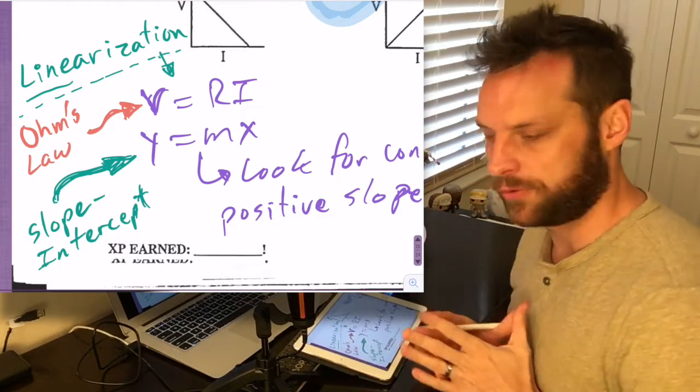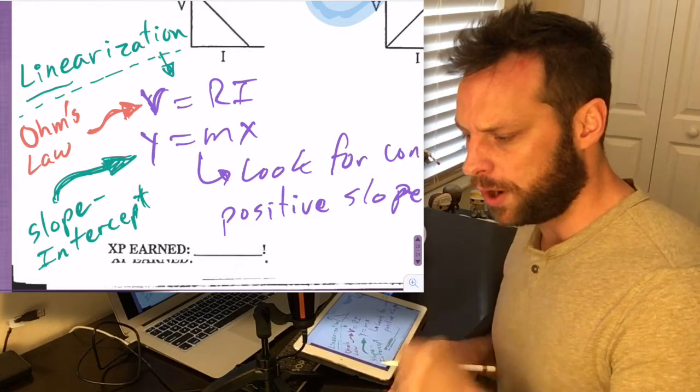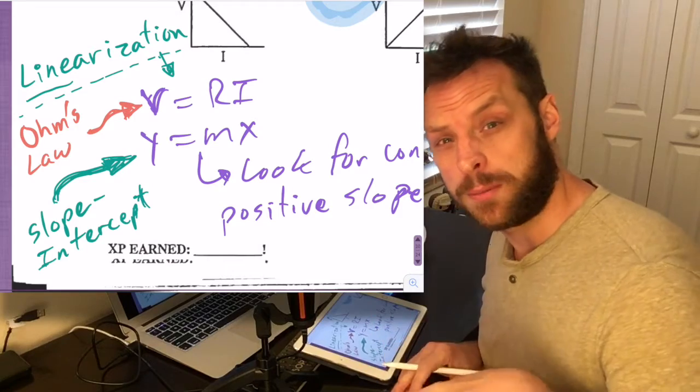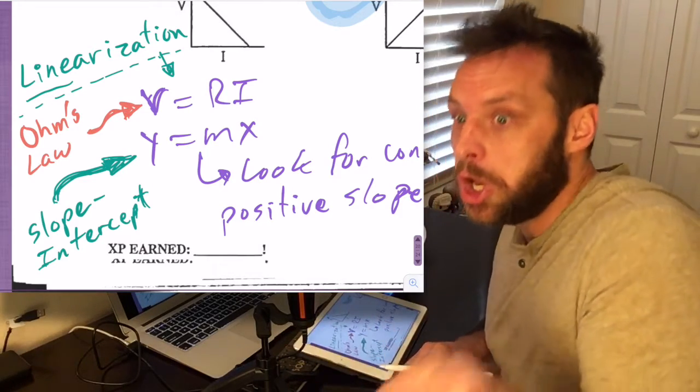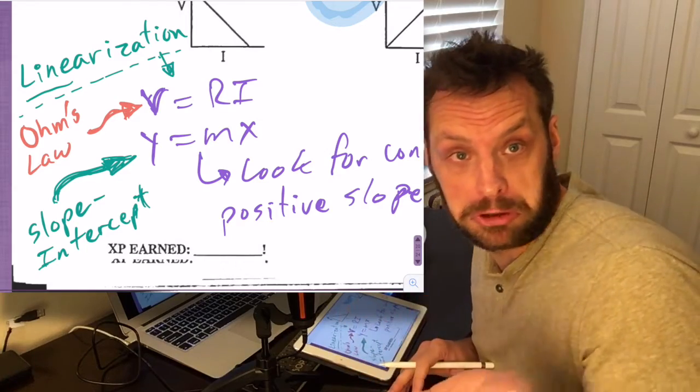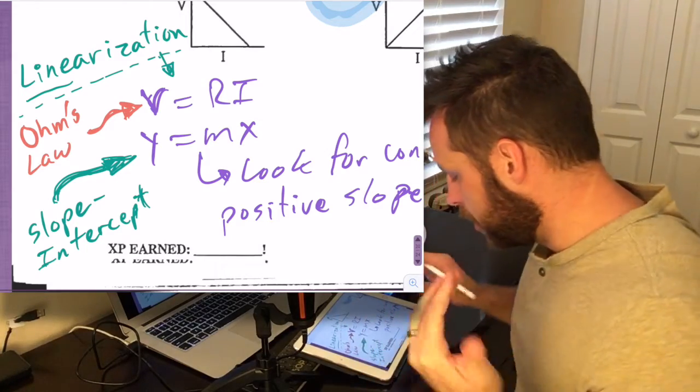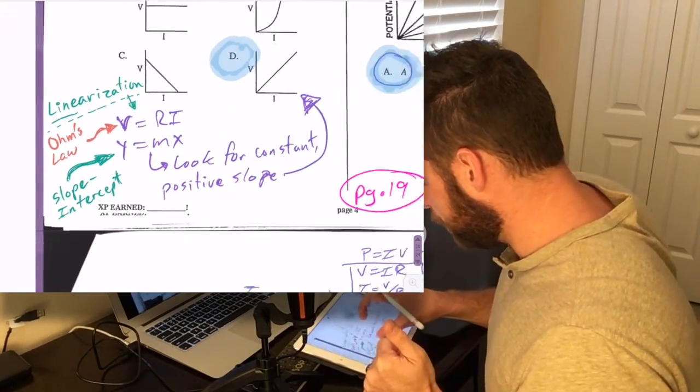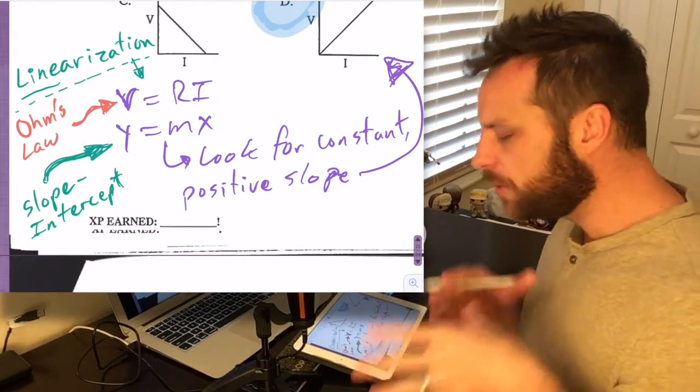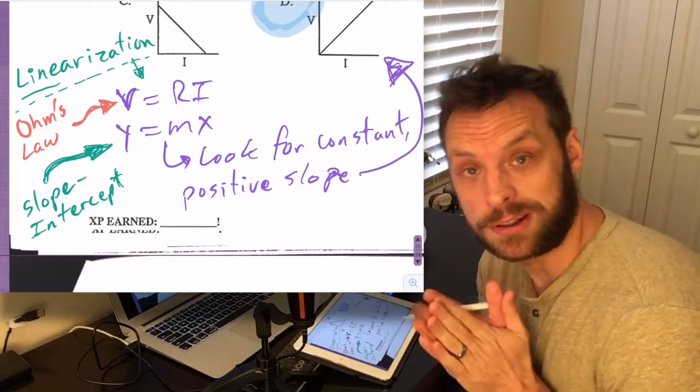And then I'm going to write slope intercept form without the Y axis intercept piece, the plus B at the end. So we have Y equals MX plus B, but imagining that B is equal to zero, so we don't have to write it. Plus zero is nothing. So Y equals MX. Why did I write that? Because I want to linearify Ohm's law.